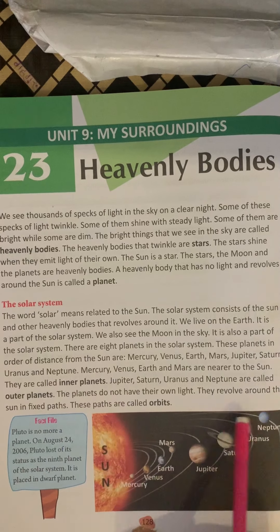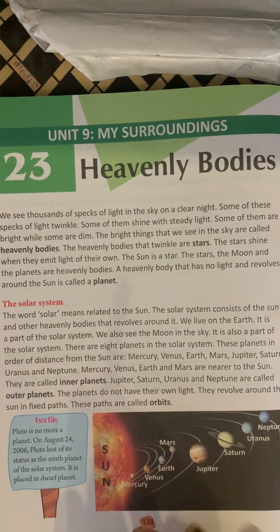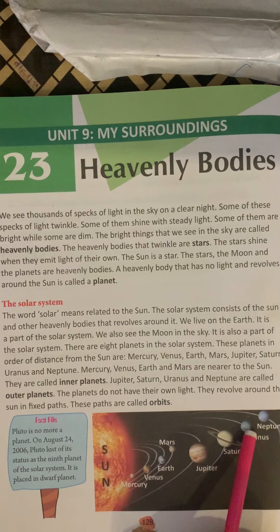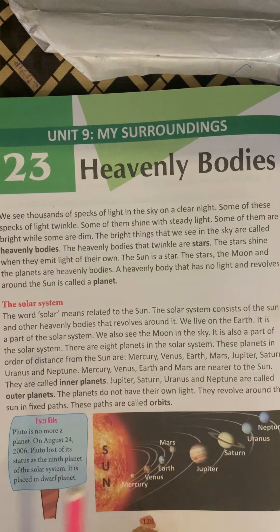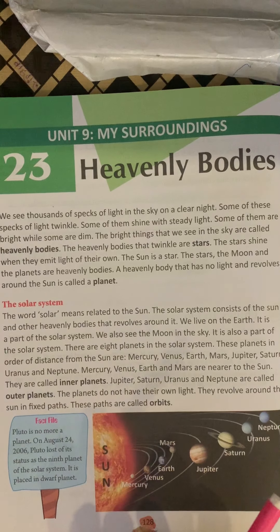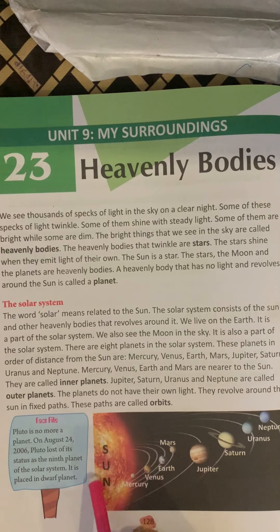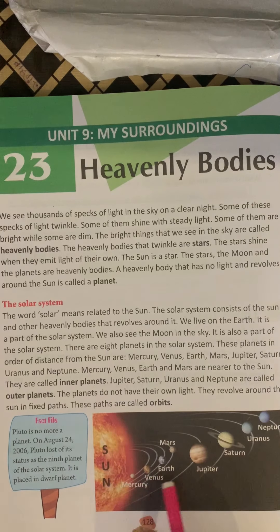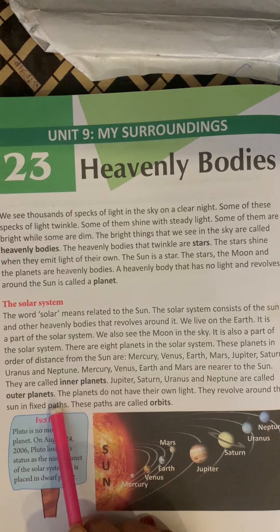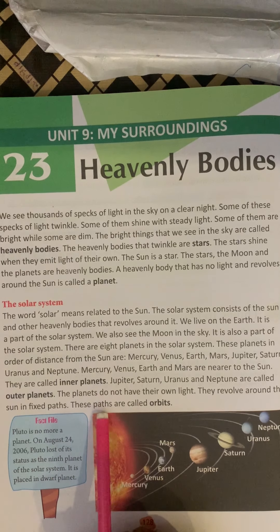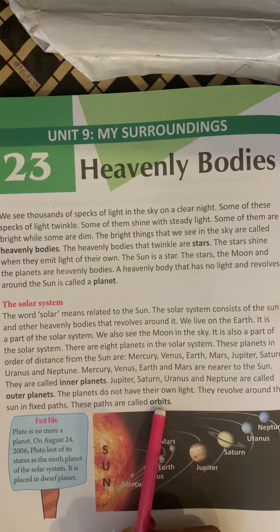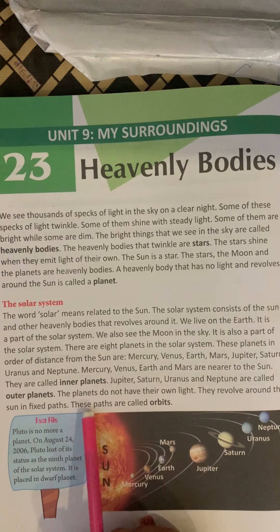The planets do not have their own light. Planets ki apni light nahi hoti. Sun se milti hai unhe light. Stars ke paas apni light hoti hai, but planets ke paas apni light nahi hoti. They revolve around the sun in a fixed path. Ek fixed path mein sun ke aas-paas ghumte hain. These paths are called orbits.